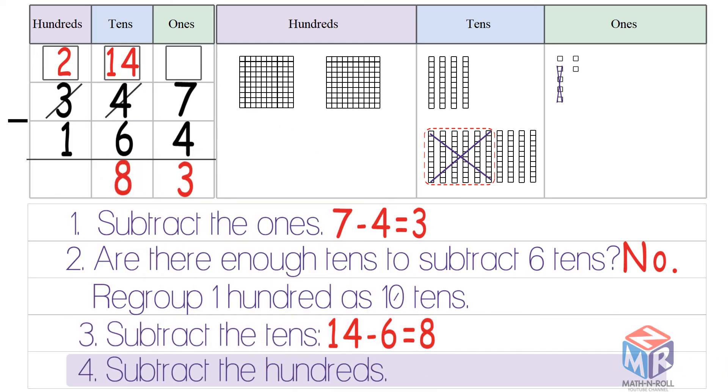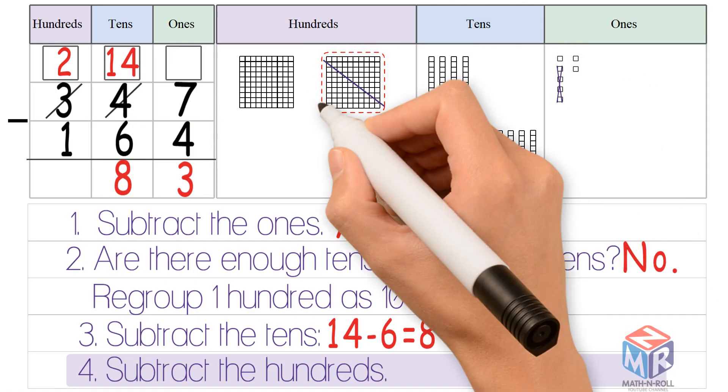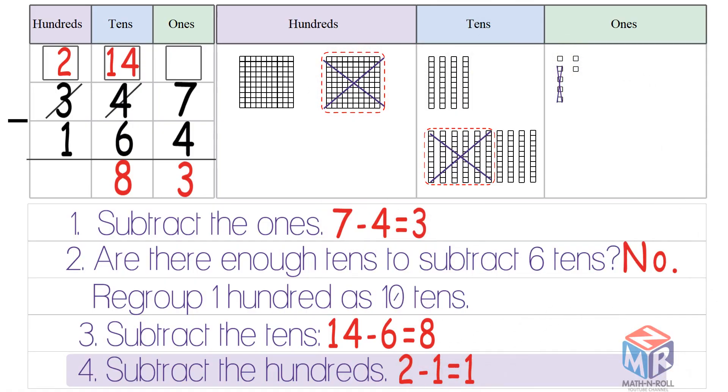Lastly, we subtract the hundreds. 2 minus 1 is equal to 1. So 347 minus 164 is equal to 183.